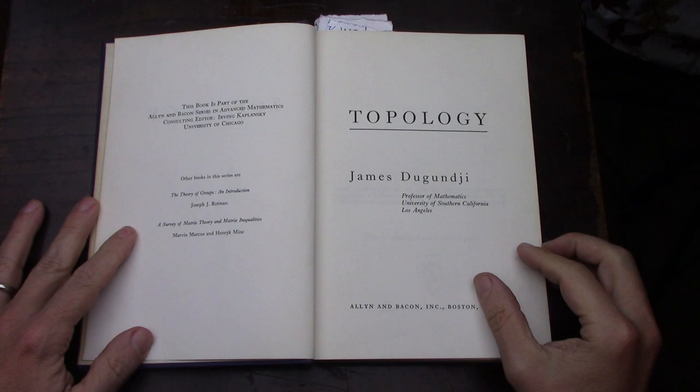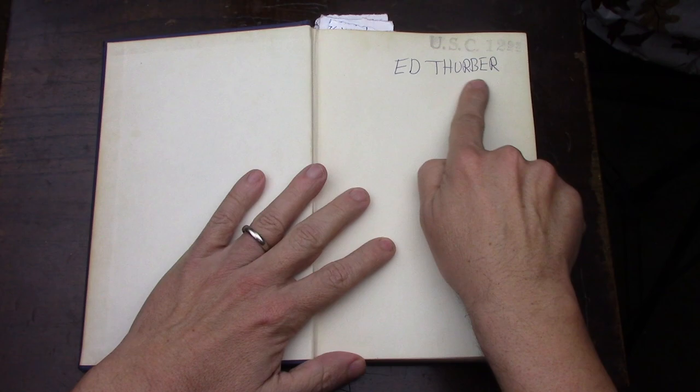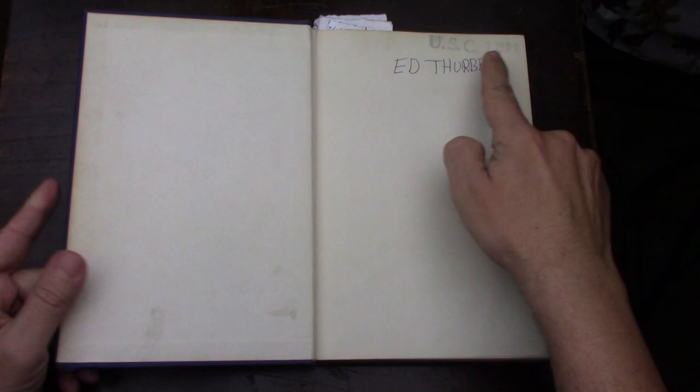This book is a reference in John Conway's Point Set Topology, and I got an old used copy. It's James Dugundji Topology, and Mr. Ed Thurber, if you're out there, this is your book.